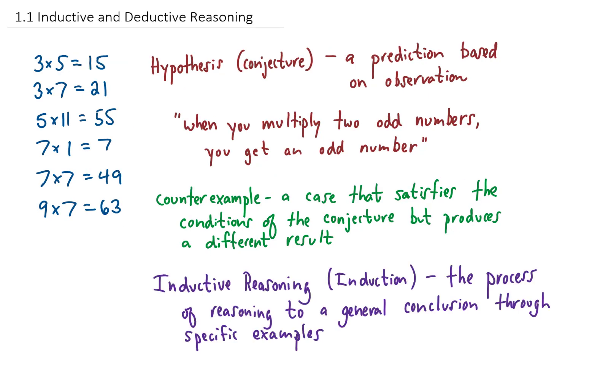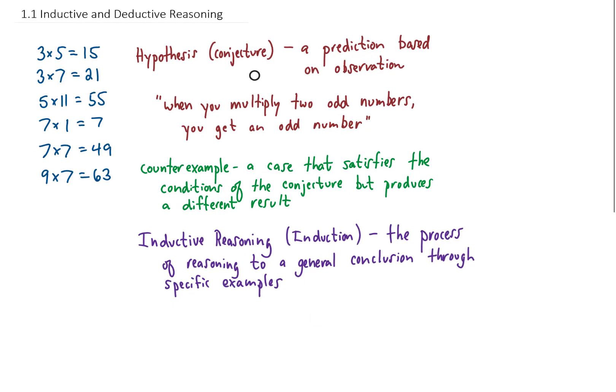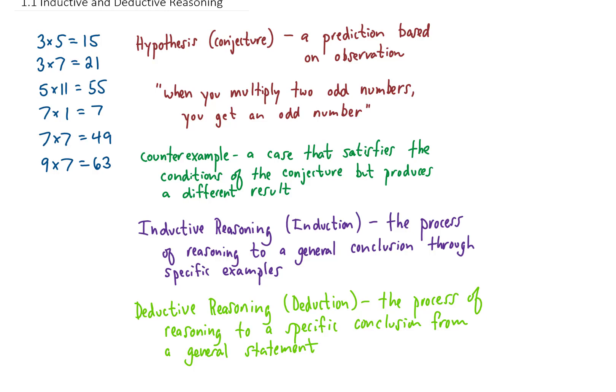And while your hypothesis in this example is very reasonable, just looking at a bunch of examples doesn't prove that hypothesis. In order to prove a hypothesis, we need to use deduction or deductive reasoning, which is defined as the process of reasoning to a specific conclusion from a general statement. Deductive reasoning is used to prove a hypothesis. We're not going to prove this hypothesis in this example.